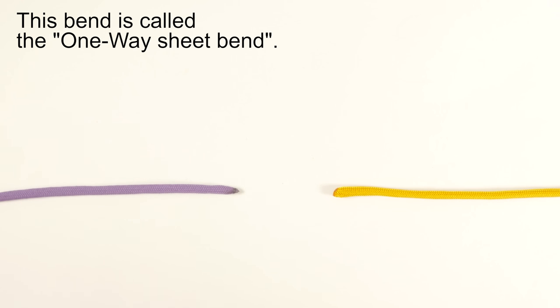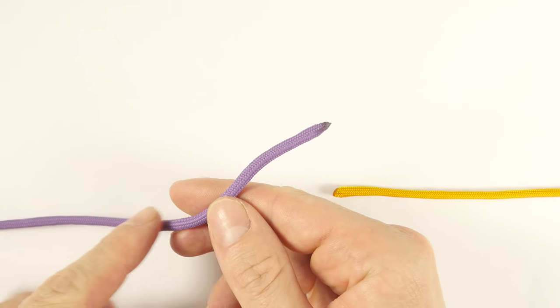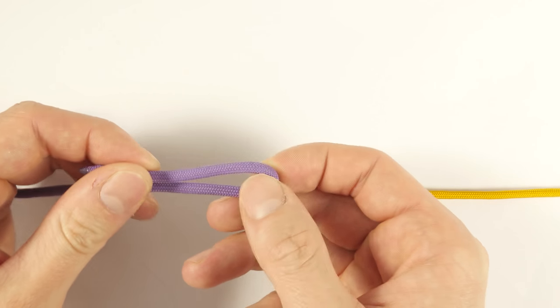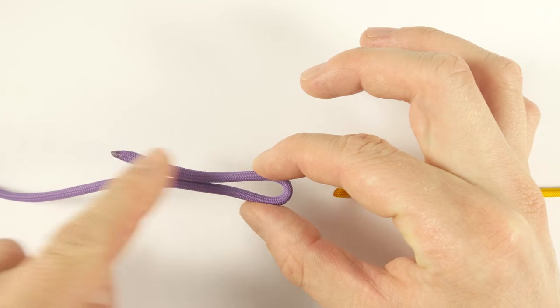The second version of a bend that you can create using the figure 8 knot is the one-way sheet bend. So in this one we first tie a sheet bend. So with one end we create a bight by folding the end over.